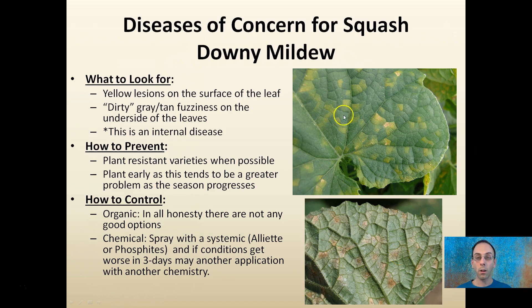Cucumbers get all the different strains of downy mildew. Other crops in the squash category, such as watermelons and pumpkins, are not susceptible necessarily to all of the six strains of downy.